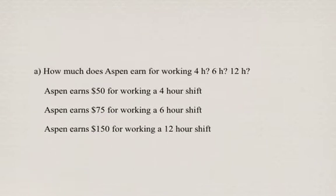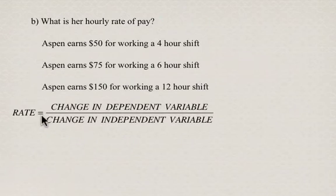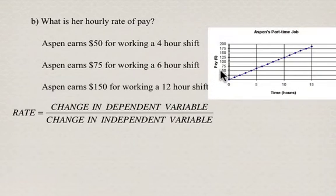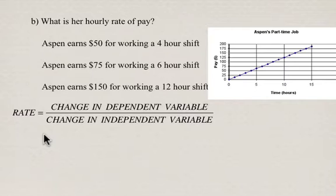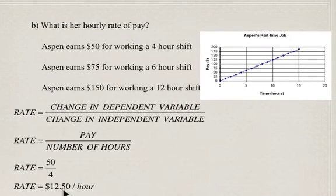What we're going to do now is take a look at this, because one of the things you might be interested in if you have a part-time job is your hourly rate of pay. We're going to use a formula: the rate is the change in the dependent variable divided by the change in the independent variable. Our dependent variable is on the y-axis and our independent variable is on the horizontal axis. So we take our pay and divide it by the number of hours worked. For the first example, $50 for a 4-hour shift: $50 divided by 4 equals $12.50 per hour.